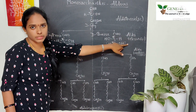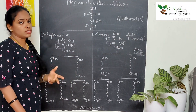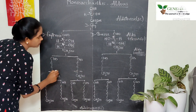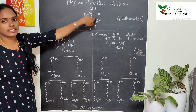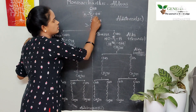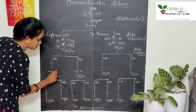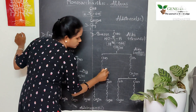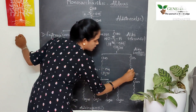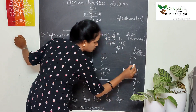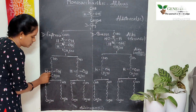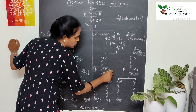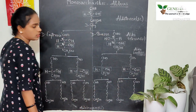In the next aldopentoses, the same principle applies. We take D-erythrose as the reference carbohydrate. For all these D-form aldopentoses, the farthest carbon must contain OH on the right side and H on the left side.